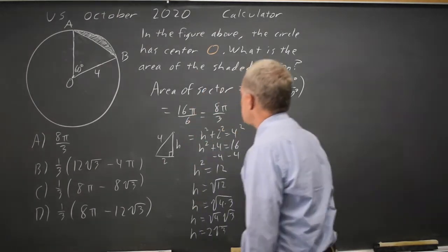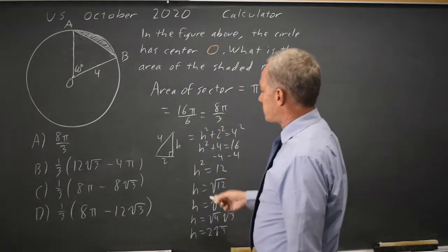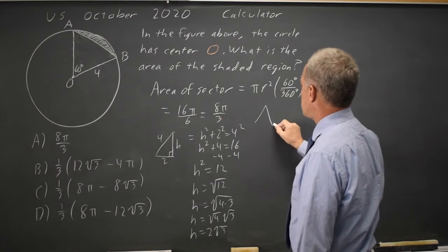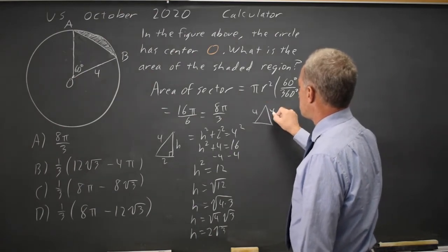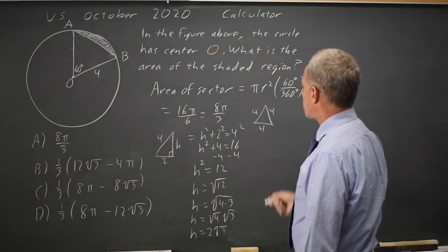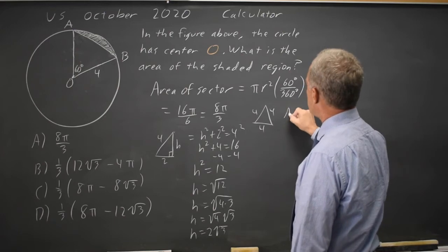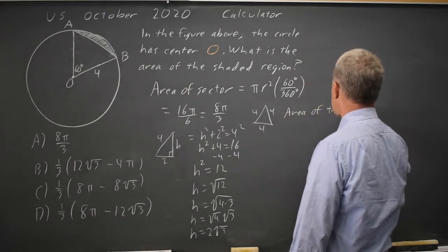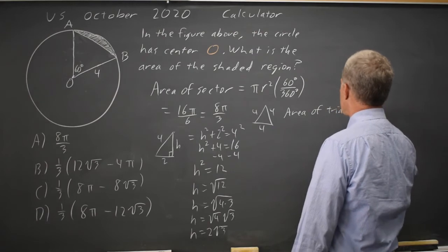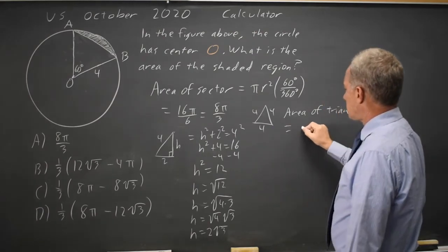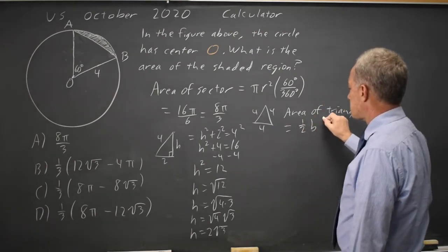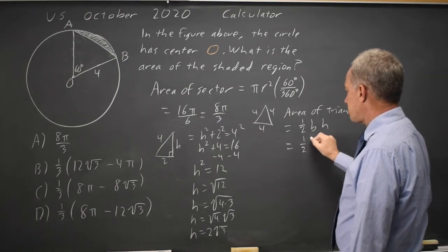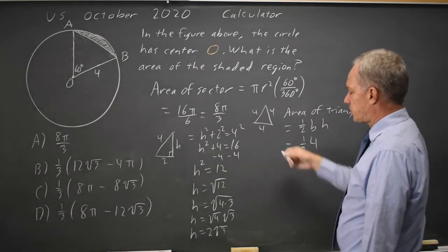Now that I have the height of the right triangle, I can find the area of the full equilateral triangle. The area of the triangle is one half times the base times the height. The base is 4, because I'm looking at the whole equilateral triangle.